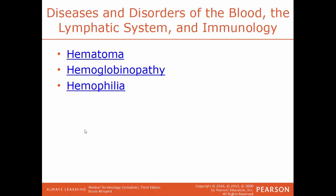Hematoma is a solid swelling of blood within the tissues — it's a general term for any swelling of clotted blood within the tissues, and the specific name depends on location. Hemoglobinopathy is an inherited condition with an abnormal structure in hemoglobin, impacting red blood cell function and decreasing oxygen delivery to tissues. Hemophilia is an inherited condition where blood doesn't clot properly due to a lack of clotting factors — sometimes called free bleeders. The ability to clot is present but severely reduced.